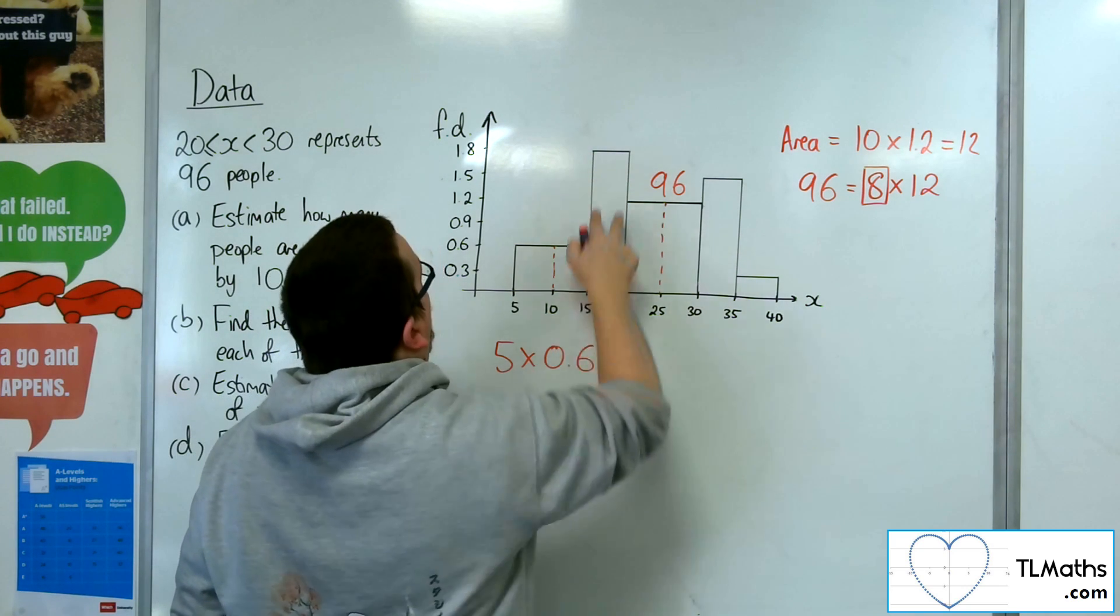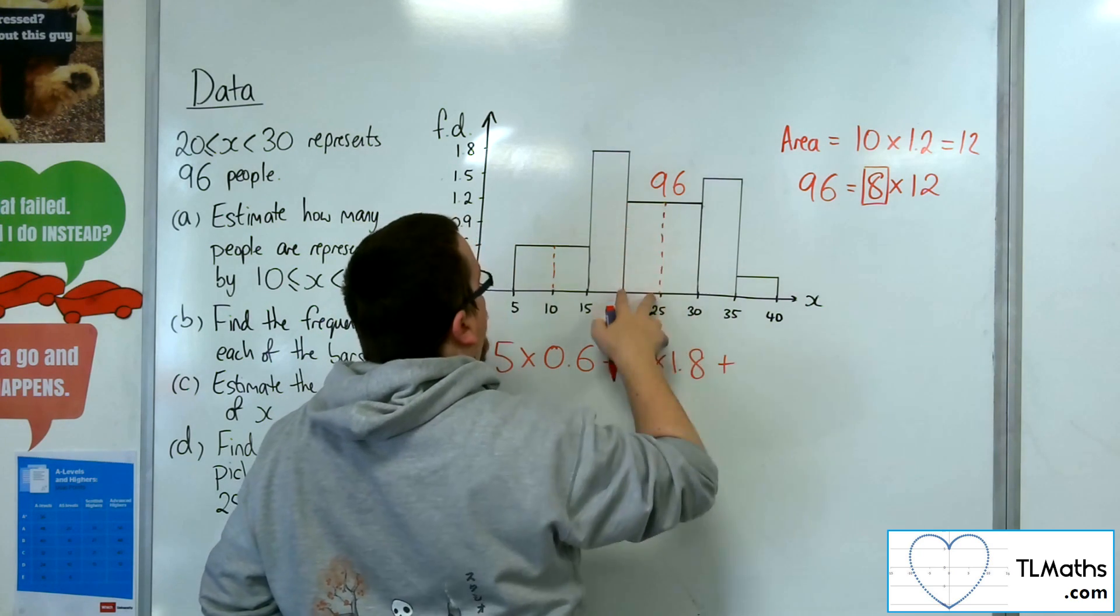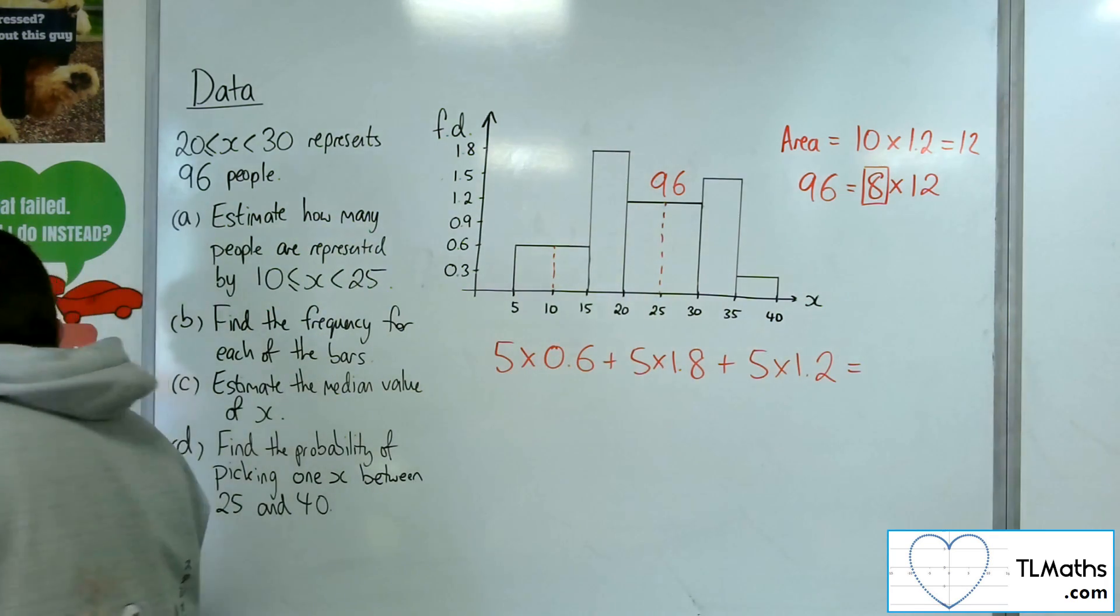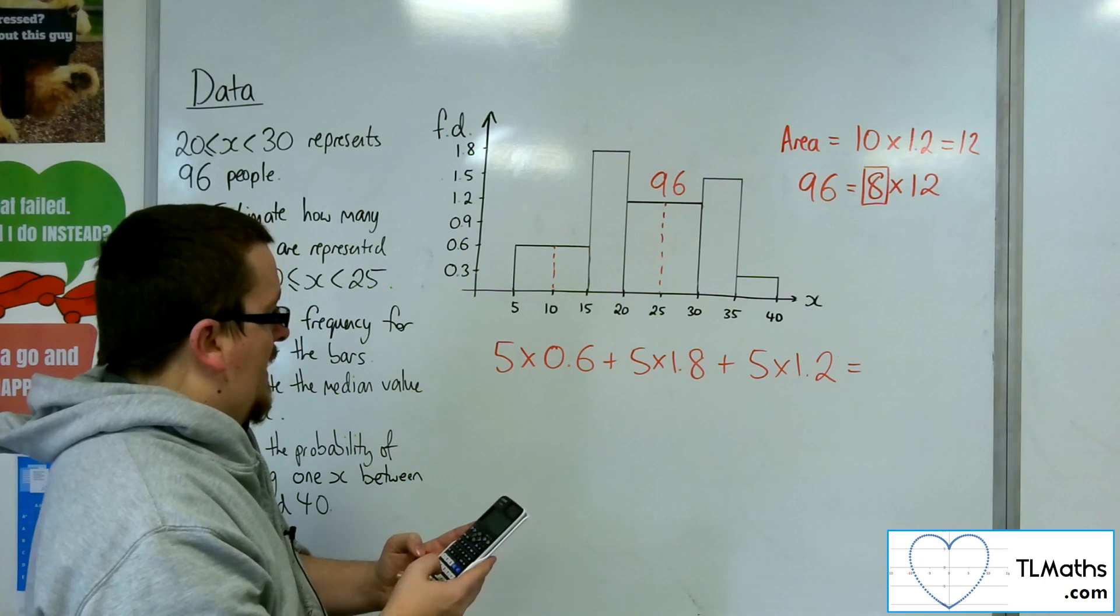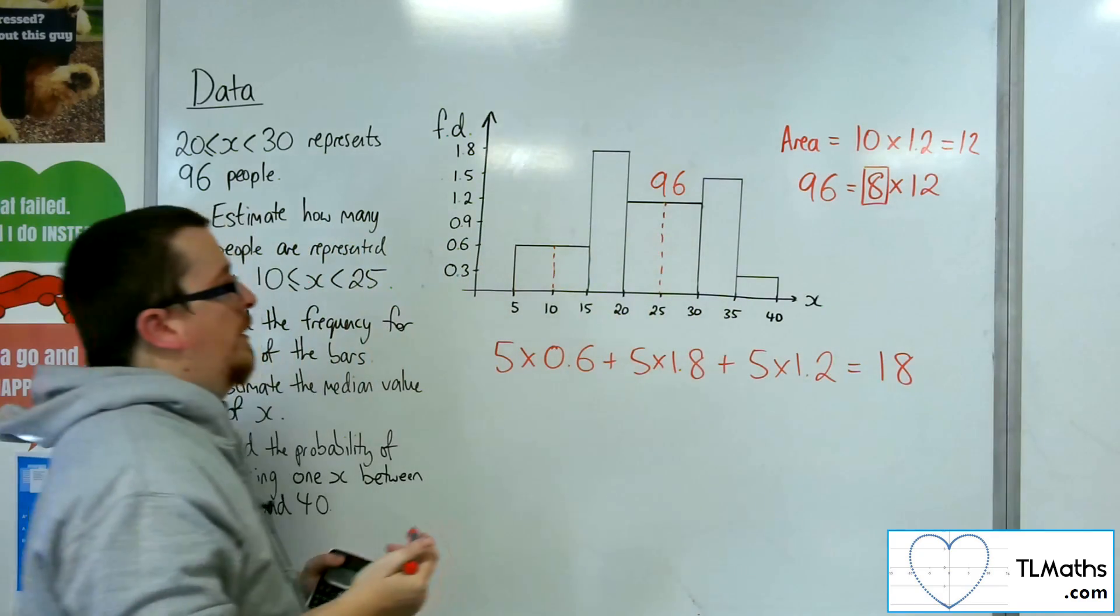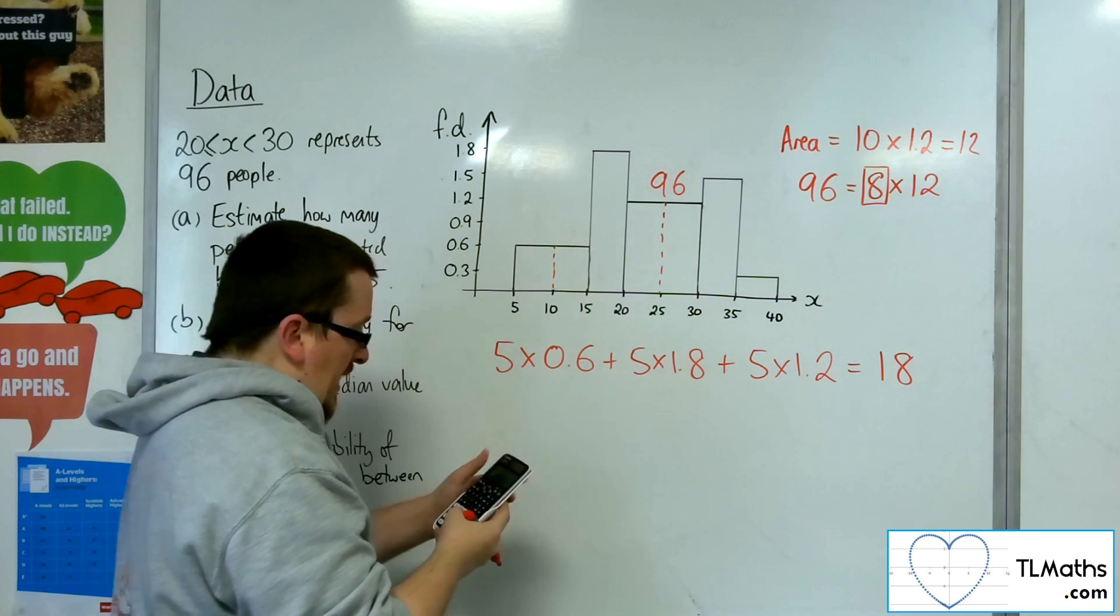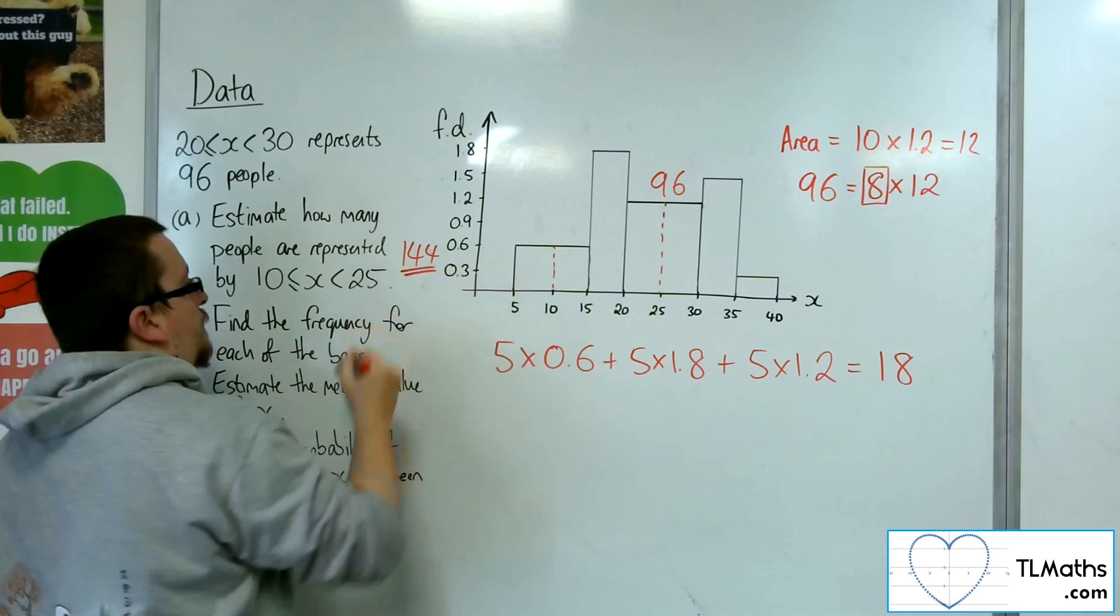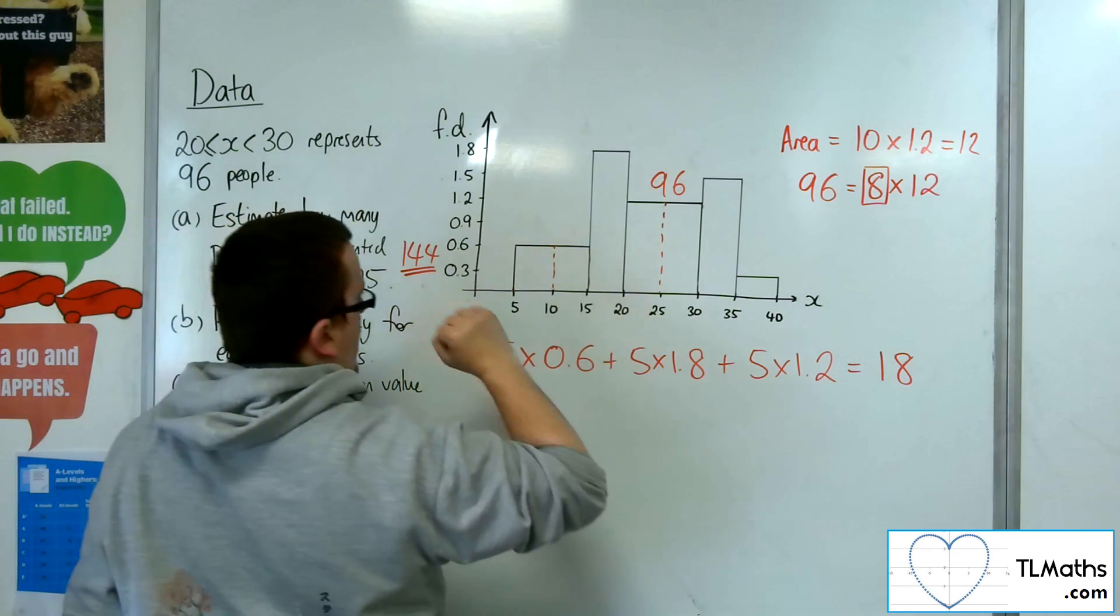and I've got this block here, which is 5 times 1.8, and I've got this block here, which is 5 times 1.2. So I work out what that is: 0.6 plus 1.8 plus 1.2, and then times that by 5, and that gets me 18. That's the area of the blocks. So the frequency is 18 times 8, which is 144. So it's 144 people that are represented between 10 and 25.